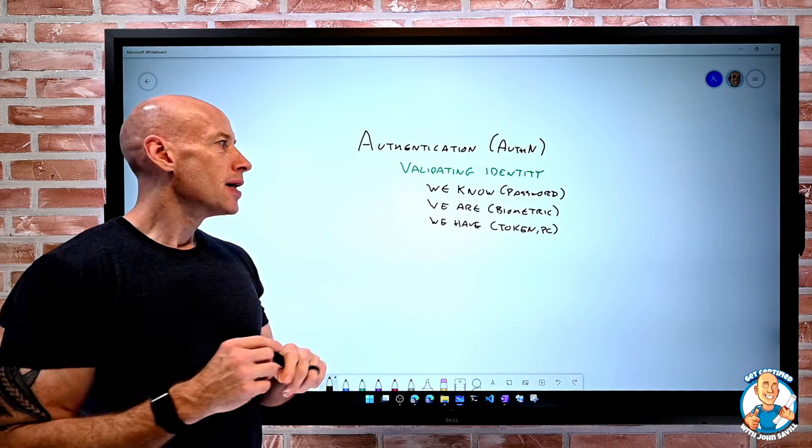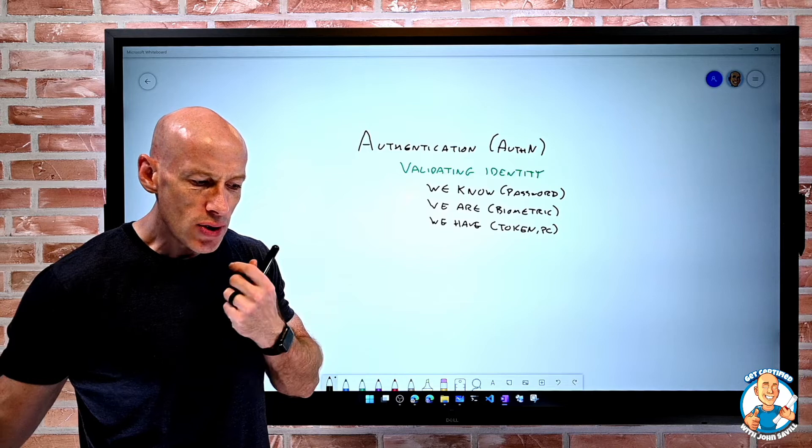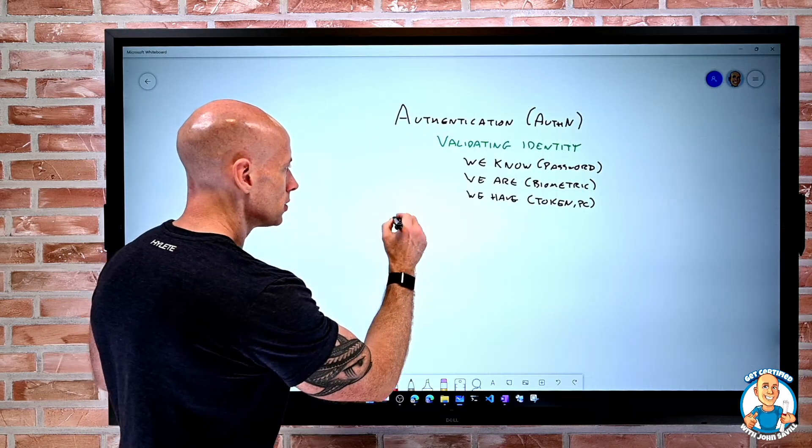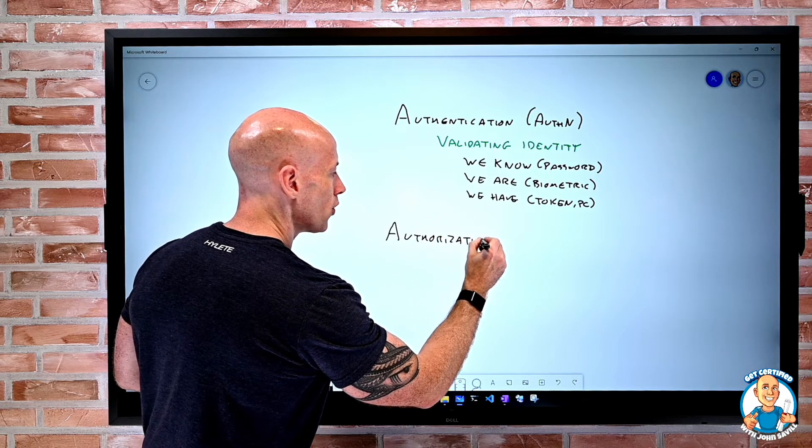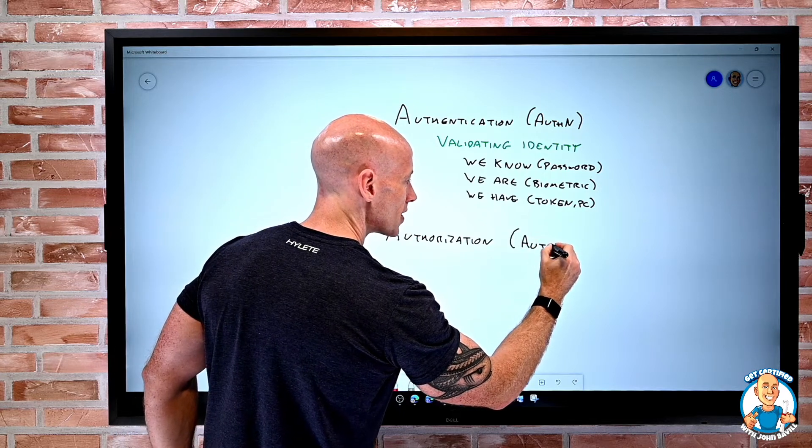So authentication is proving the identity. You really are who you say you are. Now, authorization comes afterwards. We've proven who we are. You'll also hear this called AuthZ.